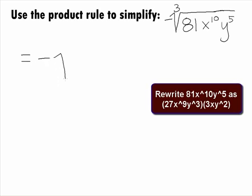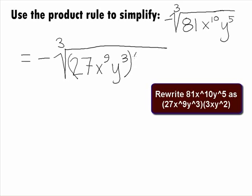So, we can rewrite the 81x to the 10th y to the 5th under the cube root as 27x to the 9th y cubed times 3xy squared. So, this will give us a negative cube root of 27x to the 9th y cubed times 3xy squared.